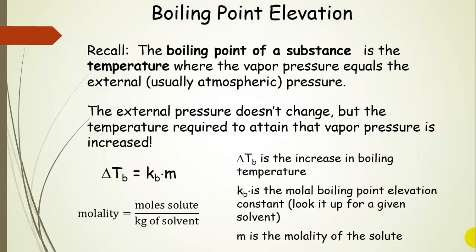Let's talk about boiling point elevation first. The boiling point of a substance is the temperature where the vapor pressure equals the external, or usually atmospheric, pressure. The external pressure doesn't change, but the temperature required to attain that vapor pressure is increased. We can calculate the increase in boiling temperature using this equation. Kb is the molal boiling point elevation constant, which you look up for a given solvent. Remember, colligative properties only depend on the relative numbers of particles, not what they are, so you just look it up for a given solvent.